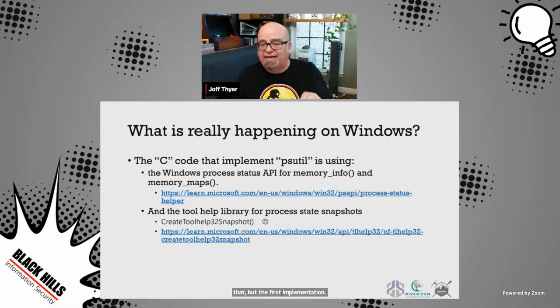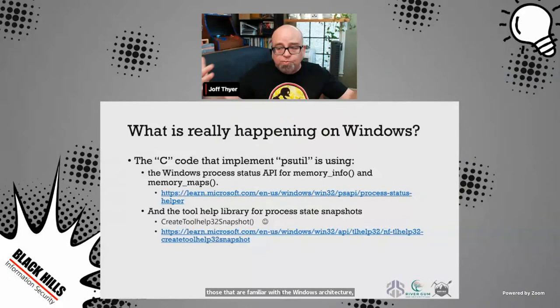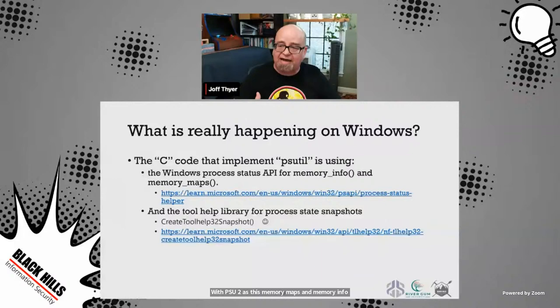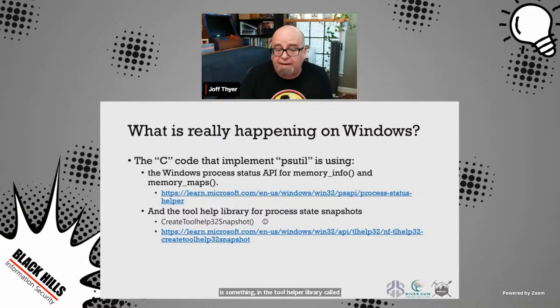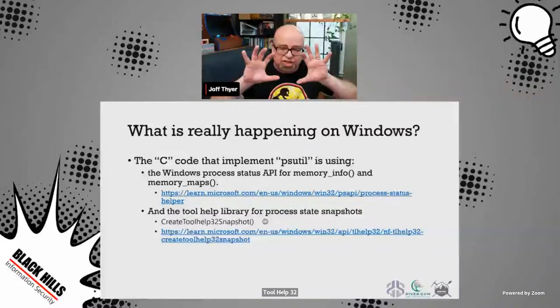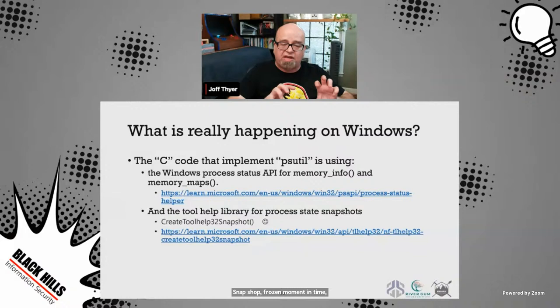For those familiar with the Windows architecture, what's really happening behind the scenes with psutil's memory_maps and memory_info functions? There are really a couple of different APIs in the Windows foundational classes being called. One is the process status API, and the other is something in the tool helper library called CreateToolhelp32Snapshot, which gives a process state snapshot — a frozen moment in time — from which we can derive information. Under the hood, the C code that backs the psutil module uses these APIs on Windows.